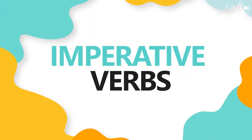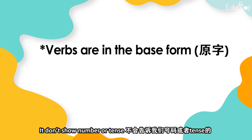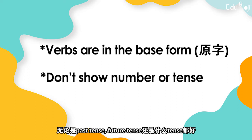Imperative verbs. Imperative verbs are verbs in the base form — they go back to their original word form. They don't show number or tense, whether it's past tense, future tense, or any other tense.